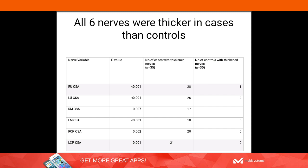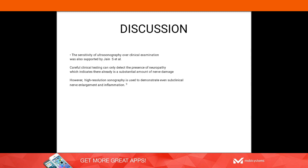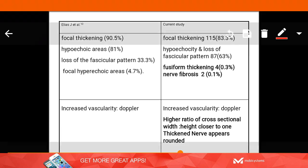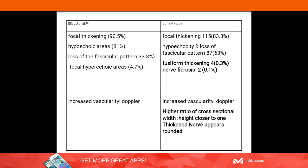Looking at each nerve individually, the number of patients with thickened nerves was significantly higher than in healthy individuals, with most p-values less than 0.001. The superior sensitivity of ultrasound over clinical examination has been supported by other studies. Clinical testing can only detect neuropathy when there is already large nerve damage, whereas ultrasound can demonstrate subclinical nerve enlargement and inflammation. Consistent with other studies, focal nerve thickening was the most common finding, followed by hypoechogenicity and loss of fascicular pattern.